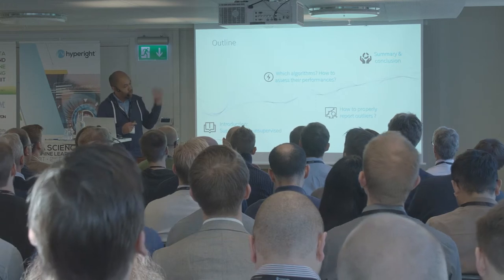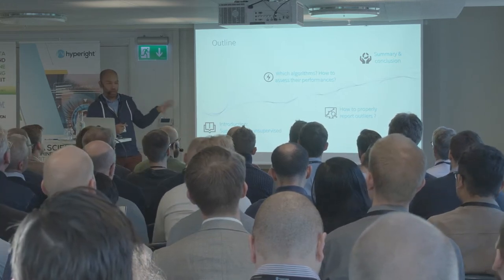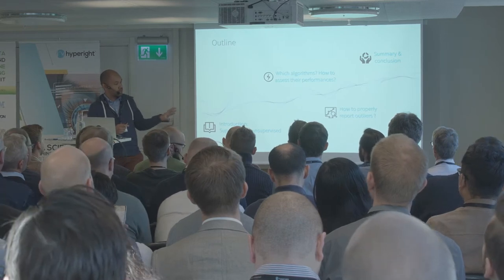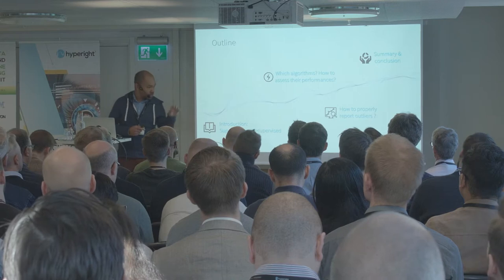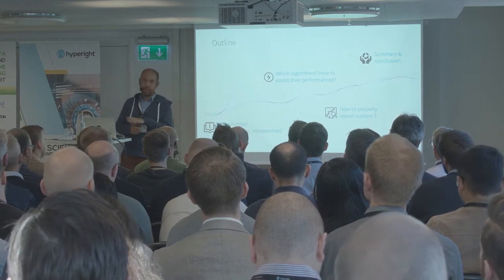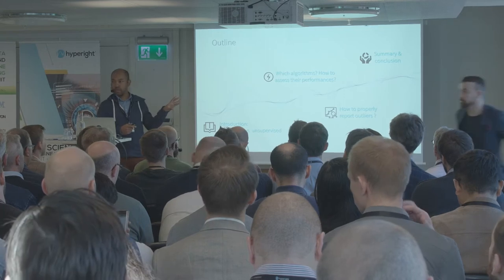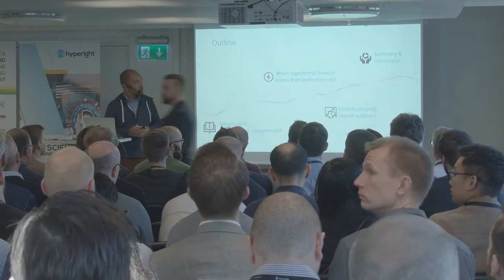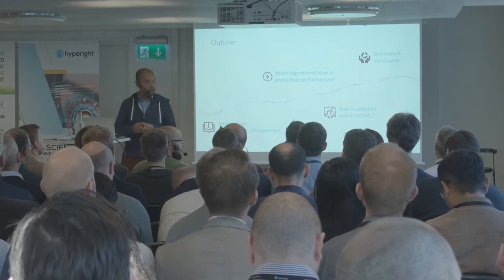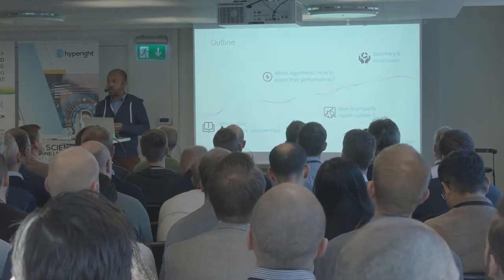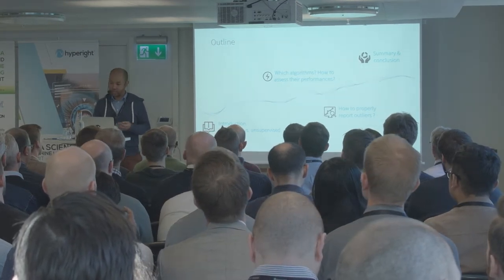Before we get started, a small outline of where we are going to go. First, I'm going to give a small introduction by defining the context of what's different between supervised and unsupervised learning. Then we will see some of the algorithms that can be used for the unsupervised case and how to assess their performances. Next, we're going to talk about how you would properly report detected outliers. And finally, we will conclude and branch out on open topics.